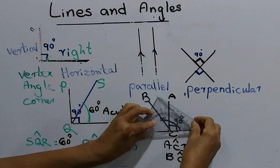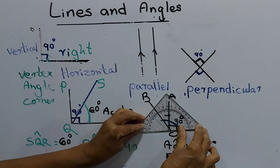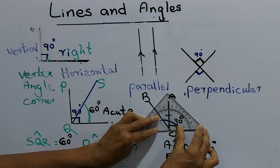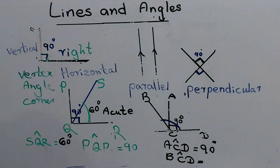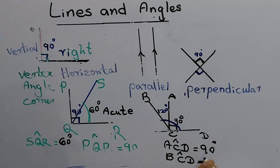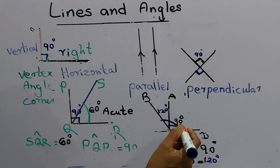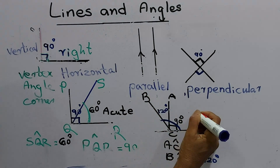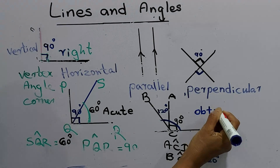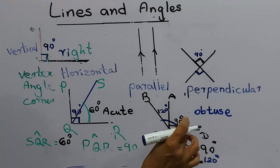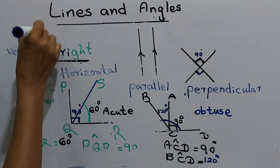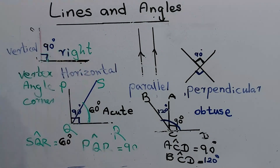We measure the BCD angle by keeping the protractor on the horizontal line. It tells us 120 degrees. So BCD is 120 degrees, and ACD is 90 degrees. BCD is more than 90 degrees. We call this an obtuse angle. An obtuse angle is more than 90 degrees; an acute angle is less than 90 degrees; a right angle is exactly 90 degrees.